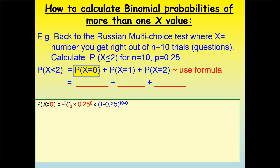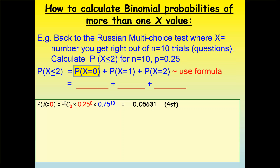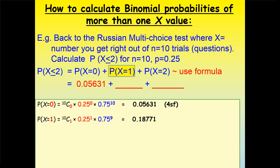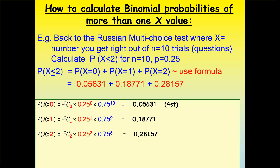We calculate each probability one by one. P(X=0) = C(10,0) × 0.25⁰ × 0.75¹⁰, giving 0.05631. Then P(X=1), substituting 1 into the formula. Then P(X=2), giving us three numbers. To find the probability of getting up to 2 correct, we add those three probabilities together.